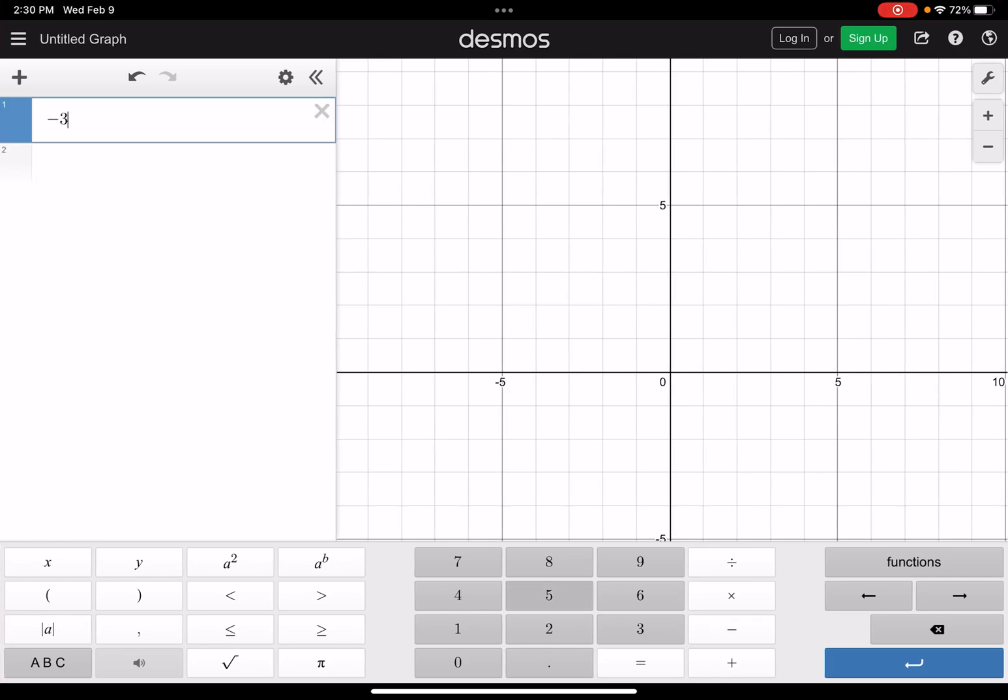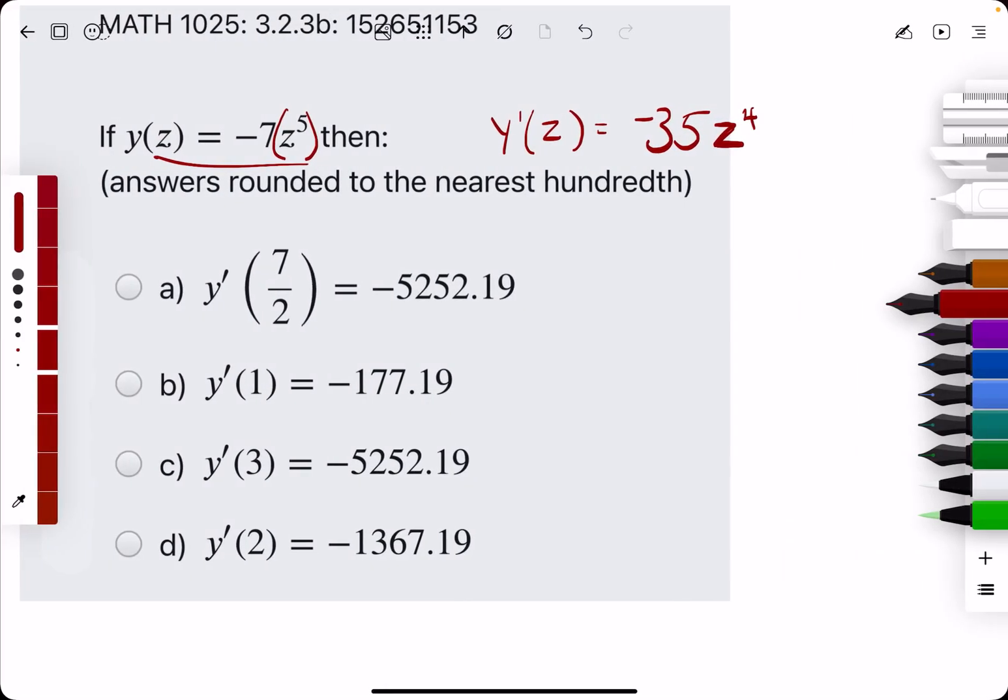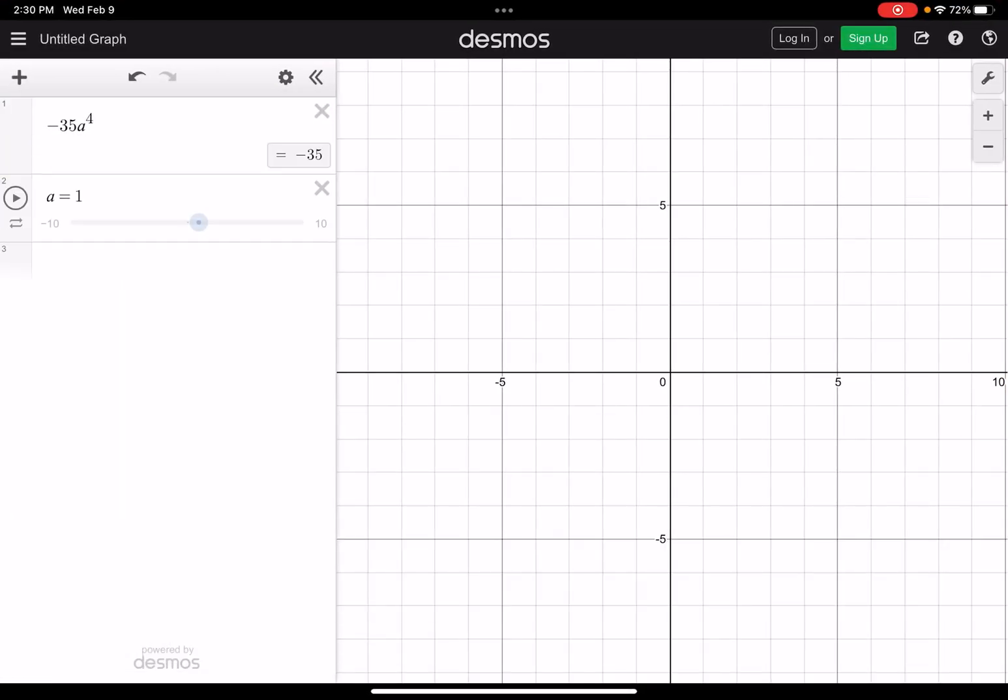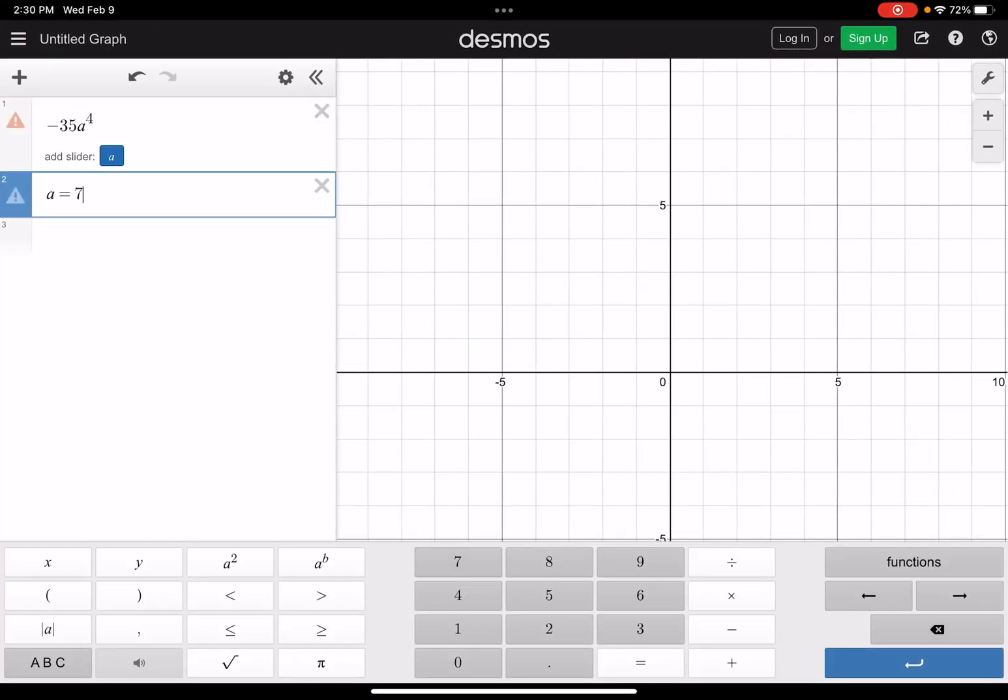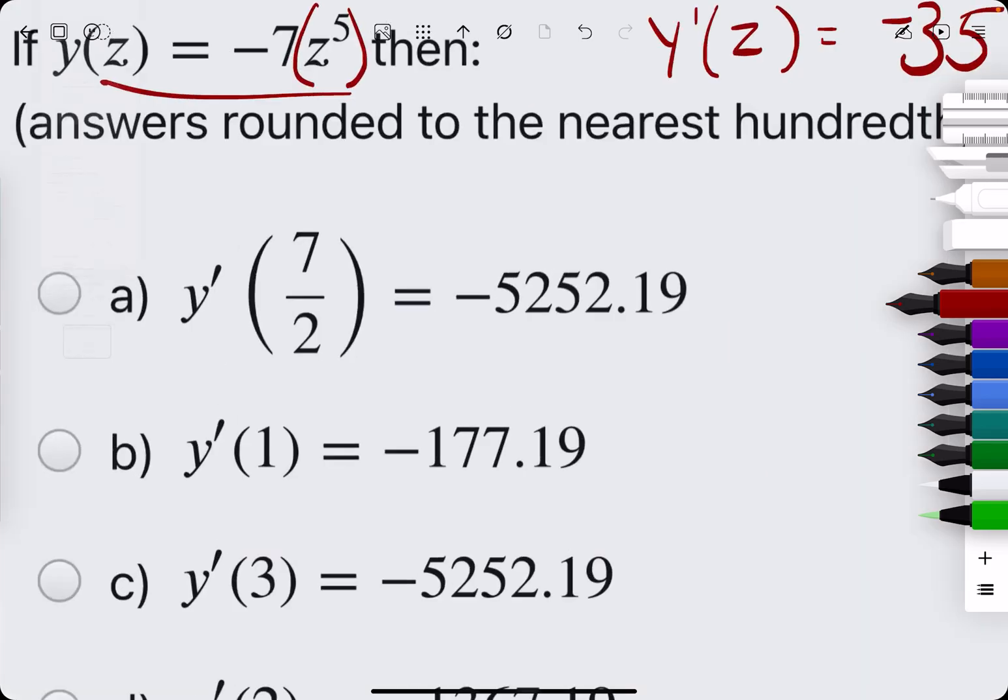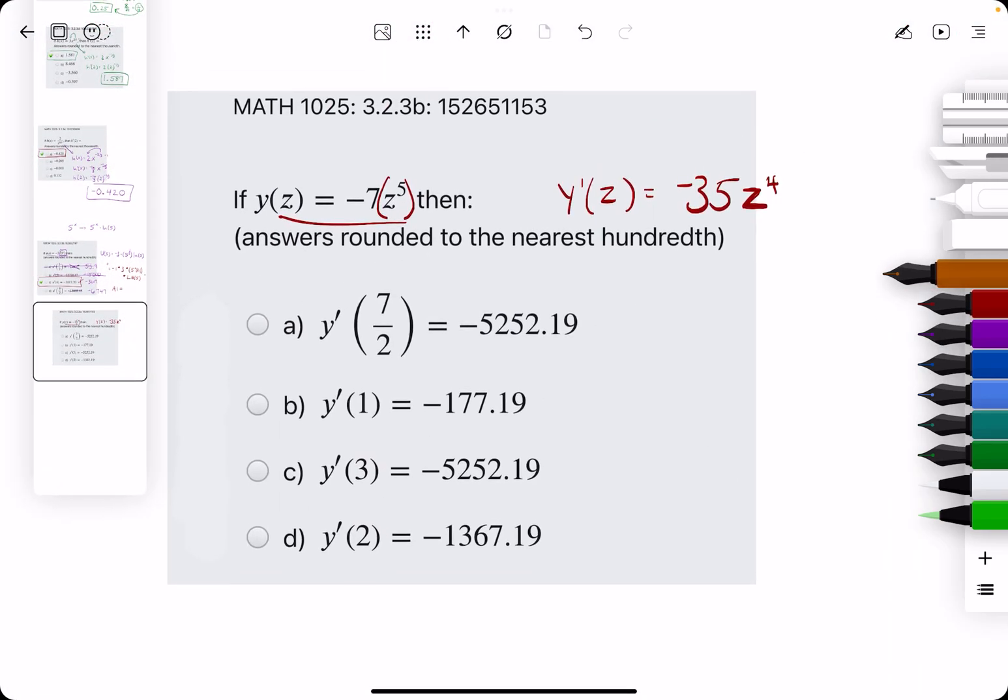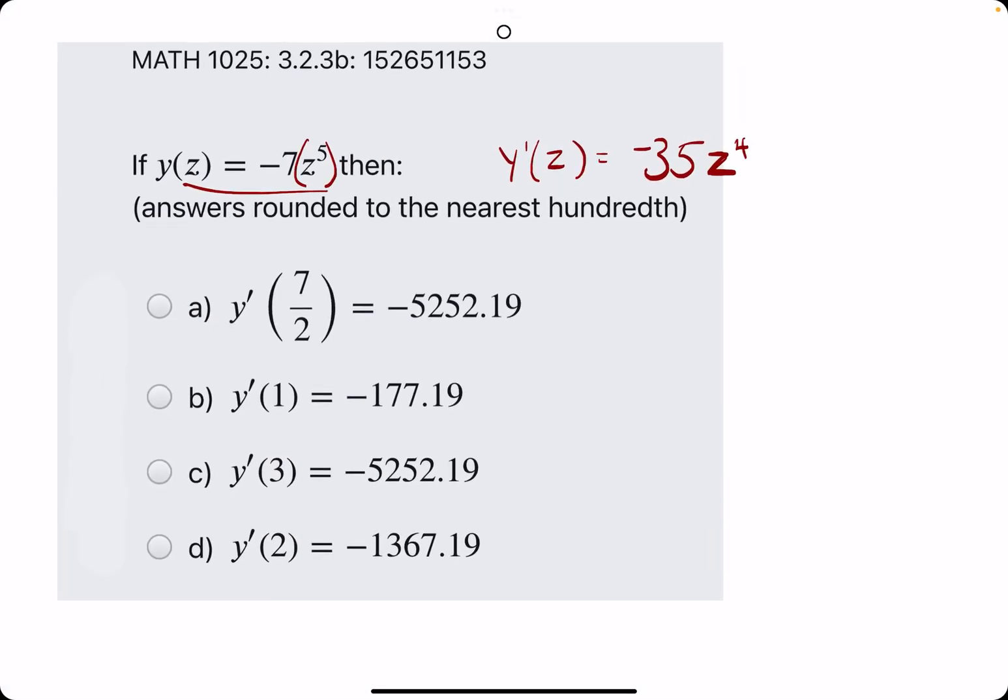Let's do negative 35, A raised to the 4th. So then we'll add in a slider. So we'll start with A is equal to just 7 over 2 from option A. So we're checking to see if A is our answer.